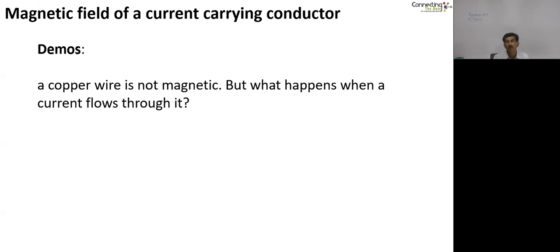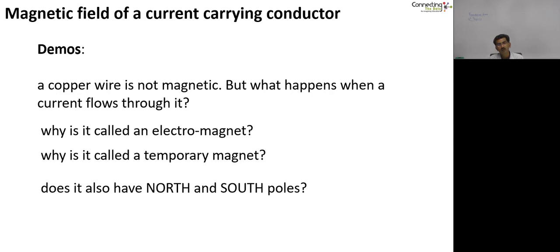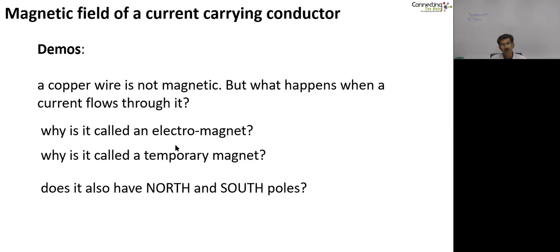When an electric current started flowing through the copper wire, it was converted into a magnet. The copper wire had a magnetic field around it. It is called an electromagnet — the name implies that it is an electric current flowing through the copper wire that caused it to become a magnet, so it is the magnetic effect of electricity which we illustrated, hence the name electromagnet. Why would we call it a temporary magnet? It remained a magnet only as long as a current was flowing through it. When electric current was not flowing through the wire, it was no longer a magnet — so it's possible to switch on and switch off this magnet, hence we can call it a temporary magnet.